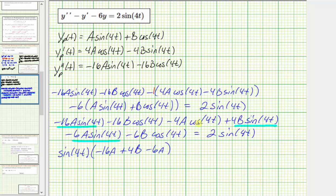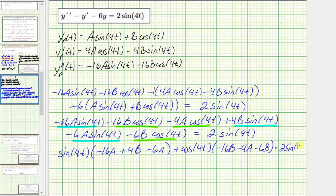Now factoring out cosine four t from its corresponding terms, we get plus cosine four t times the quantity negative sixteen B minus four A minus six B. This must equal two sine four t. Comparing the left and right sides, we can set up a system of equations involving A and B. The sine four t product must equal positive two.